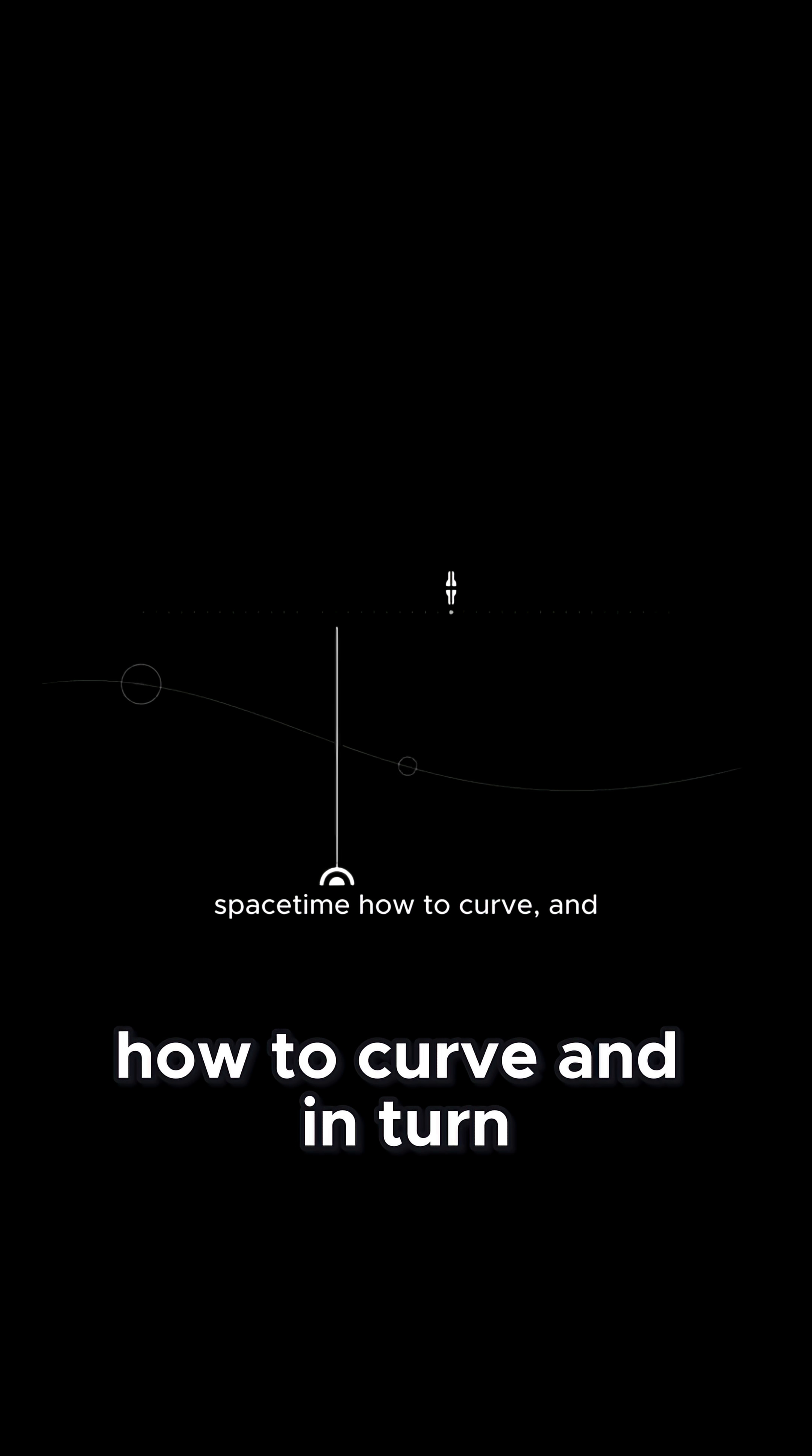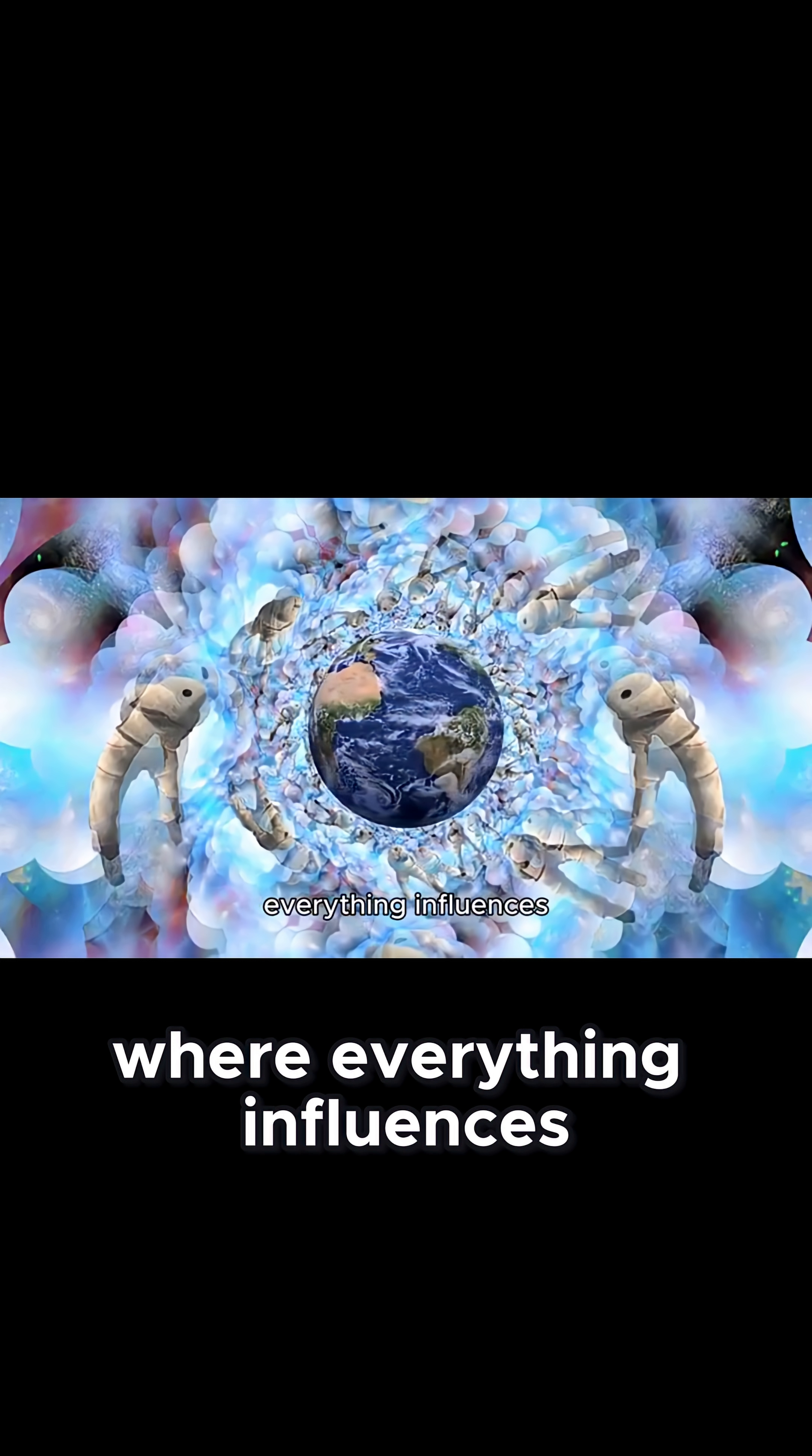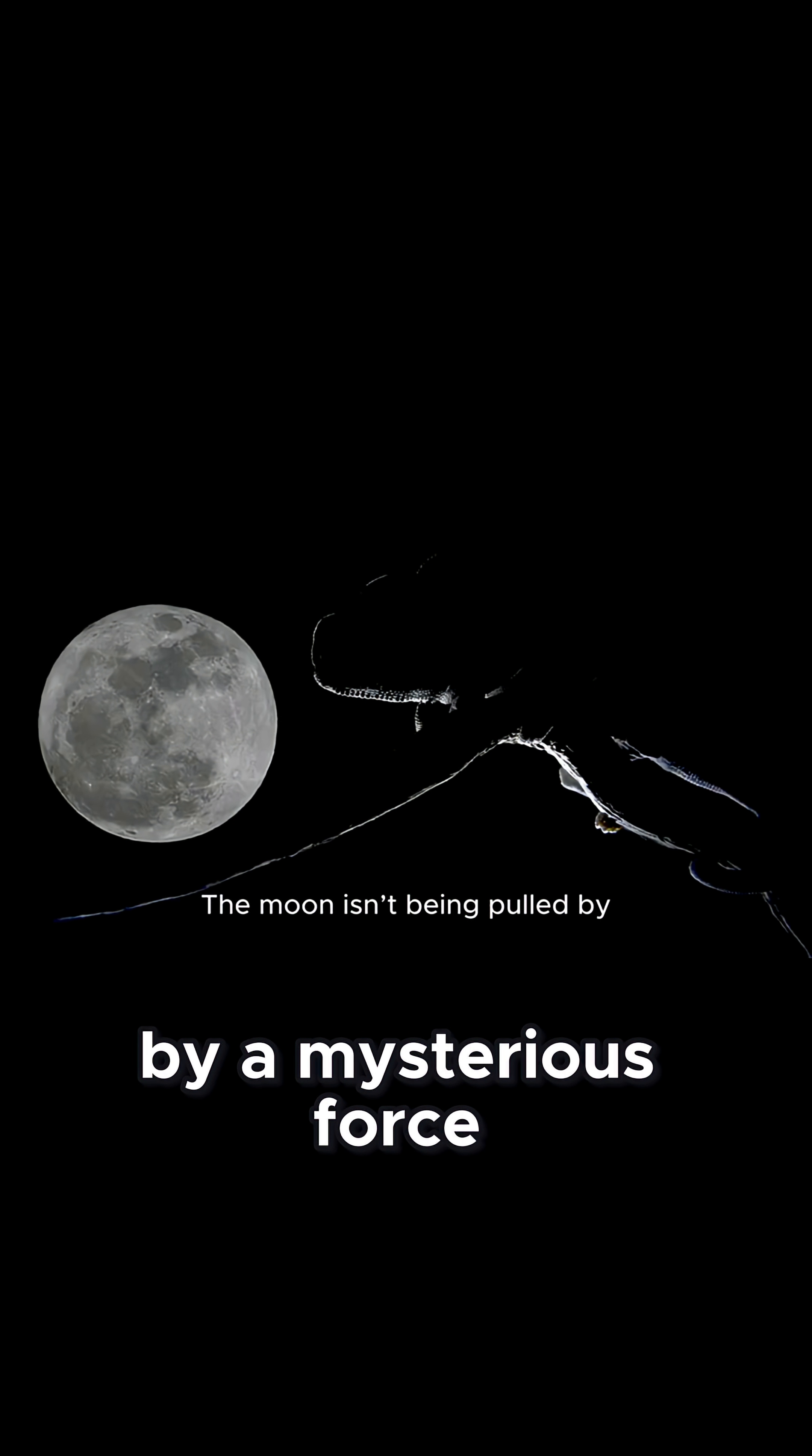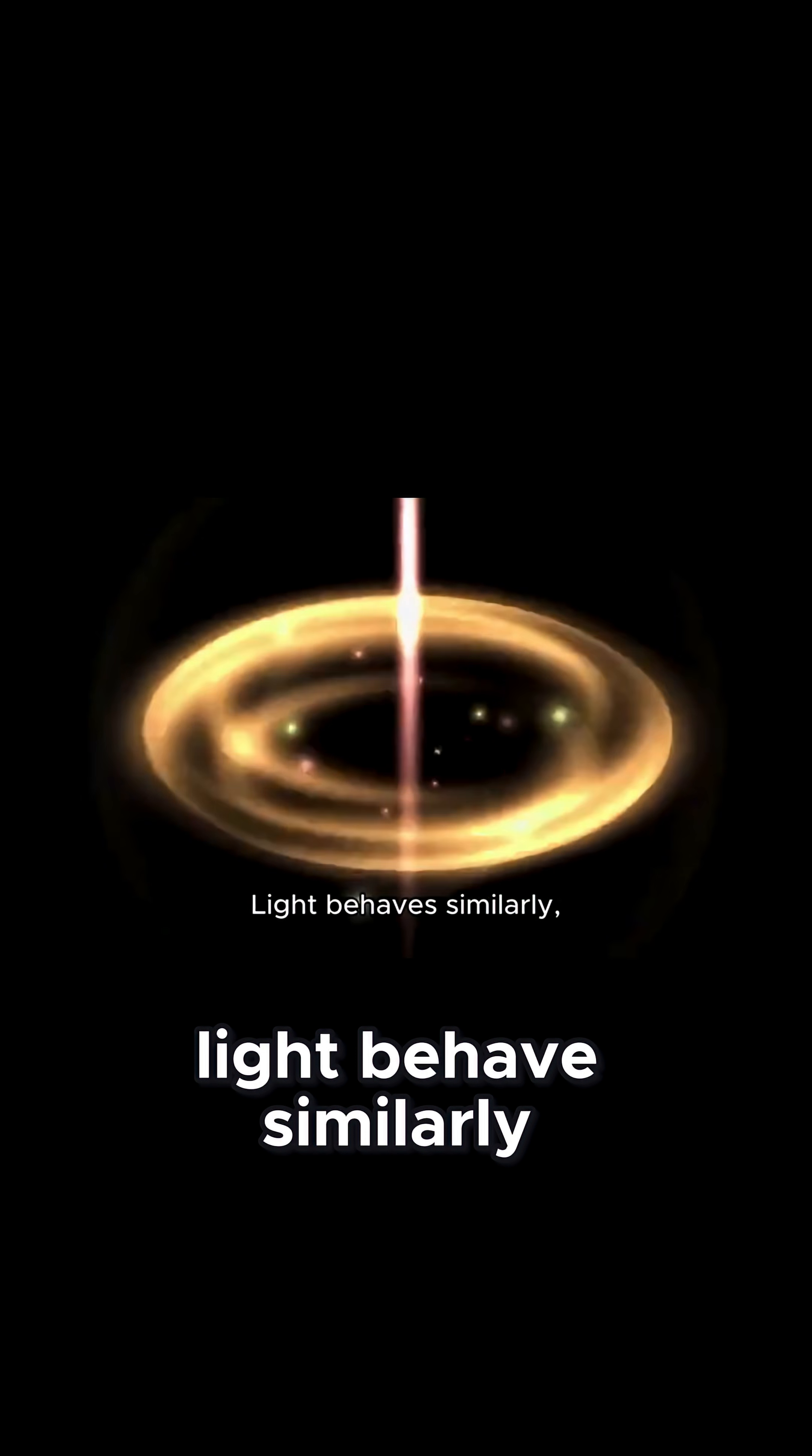Mass and energy tells spacetime how to curve, and in turn curved spacetime tells matter how to move. It's a cosmic dance where everything influences everything else. Consider us with its mass creating a dimple in spacetime. The moon isn't being pulled by a mysterious force—it's following the straightest path through this curved fabric. Light behaves similarly, bending around